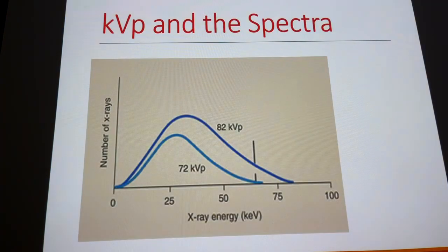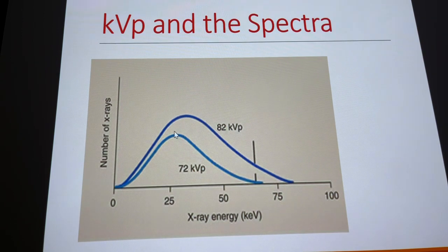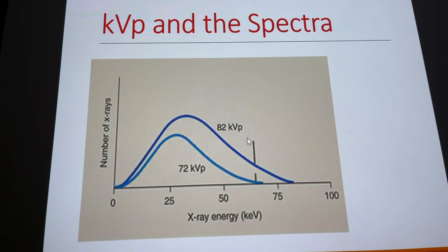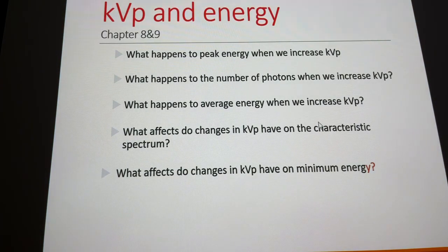We talked about KVP and the bremsstrahlung spectrum. As we increase KVP, it determines whether or not we have a characteristic spike. It increases peak energy and increases the numbers. The peak of the bubble represents average energy — it pushes everything toward the high-energy side, giving us higher average energy, higher peak energy, and an increase in numbers. If we shoot below 69.5 KVP, we don't have characteristic X-rays.